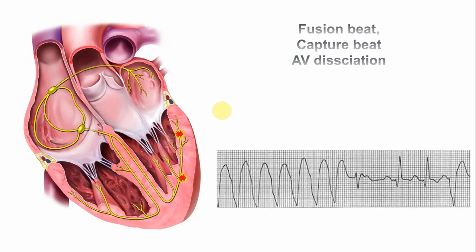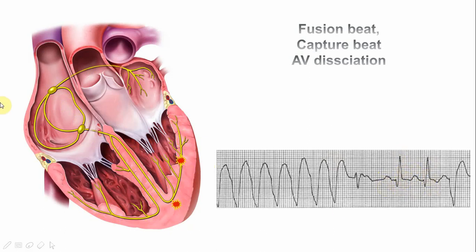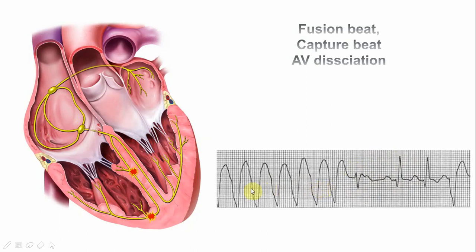As shown in the animation, the atrial activity mostly stays in the atria, but sometimes it manages to reach the ventricle — that is when we get a capture beat: a P wave followed by a narrow QRS complex. There are also fusion beats, where the impulse from the atria and the ventricular impulse travelling upward through the interventricular septum fuse together, producing a QRS complex slightly broader than normal.